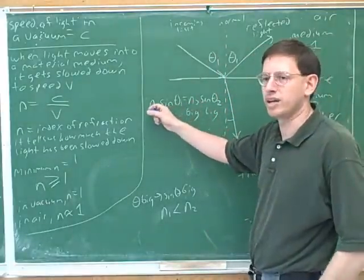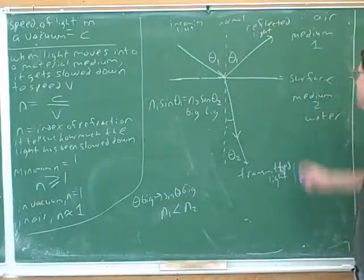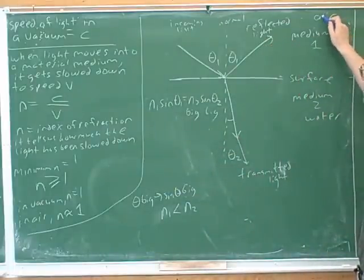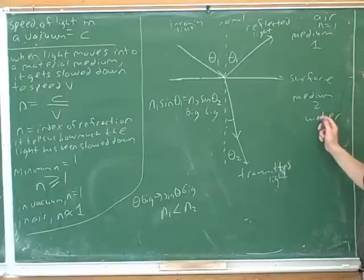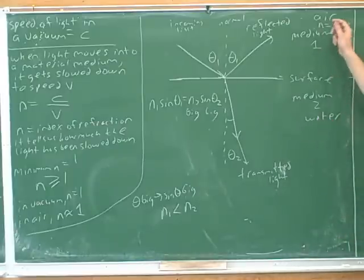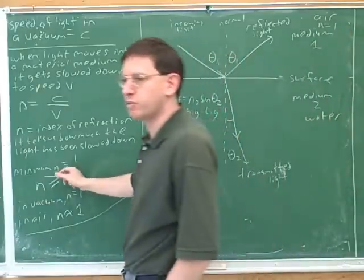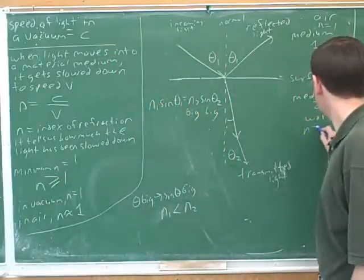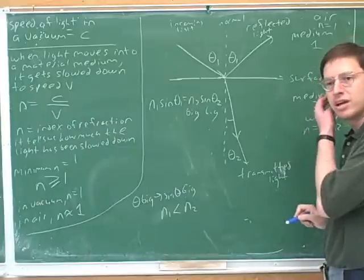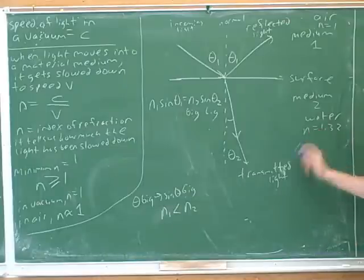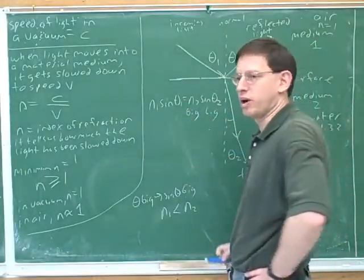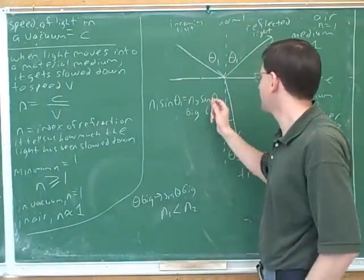So if n2 is bigger than n1, that is, we're moving into a medium with a bigger n. For example, here we have air. Remember, that has an n of 1. And here we're moving into water. Well, we know that water must have a bigger n than the air because all the ns are bigger than 1. If you looked it up in the table, you would see that n was 1.33. So this is an example where the light is moving into a medium with a bigger n. n2 here is bigger than n1.